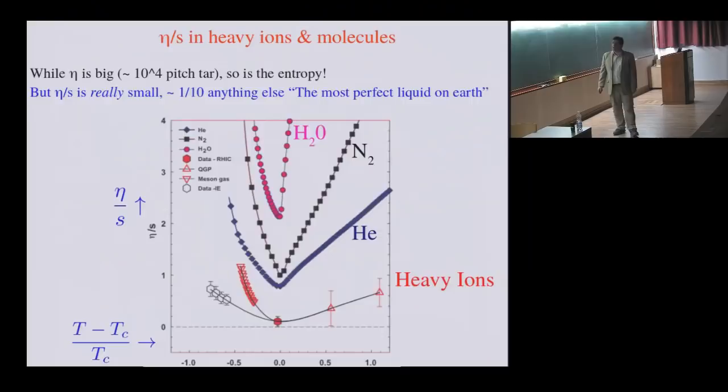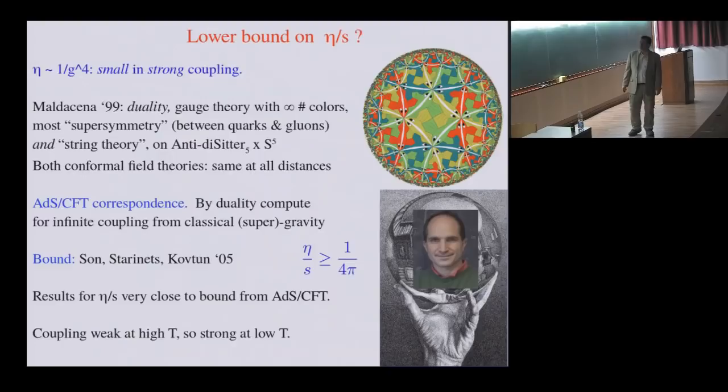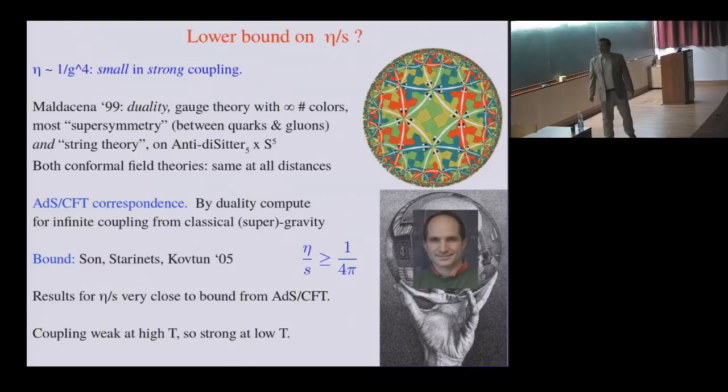You can compare this ratio of eta over S to other systems. This is a fit to heavy ions, which honestly is suggestive. But the point is that compared to other systems, such as water, nitrogen, helium, it's significantly smaller. Now, I should say that in fact the shear viscosity itself is huge, it's about 10,000 times that of pitch tar. But the entropy is also big, and so you have to form a dimensionless quantity in order to make a meaningful comparison. And in fact, Johanna Erdmenger, this afternoon, has been telling us about where a bound on this quantity comes from.